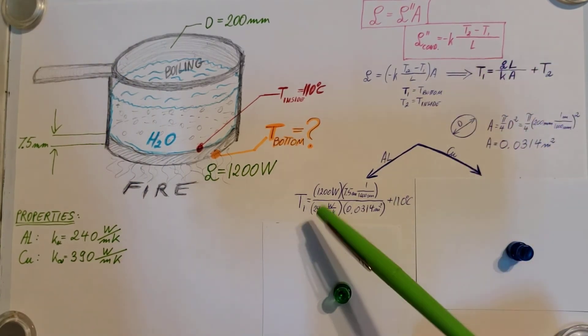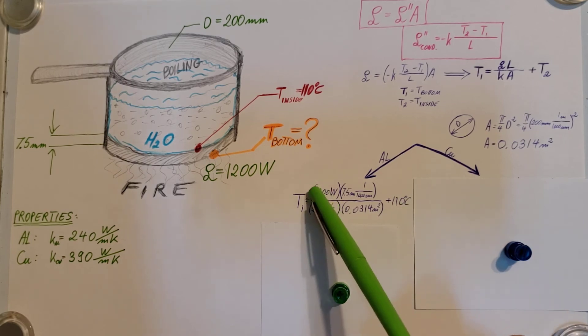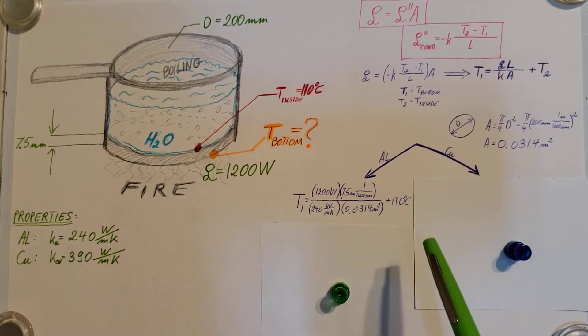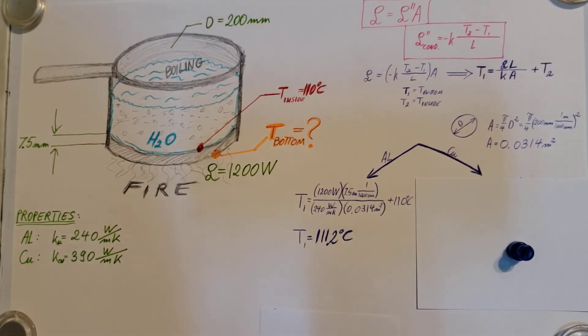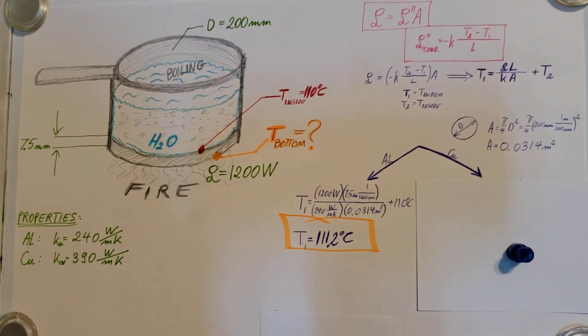Simply, I take this formula, bring it down here, and plug in everything that we have found. Make sure that you convert your millimeters into meters. There it is, and we can find our T1 is 111.2 degrees Celsius.